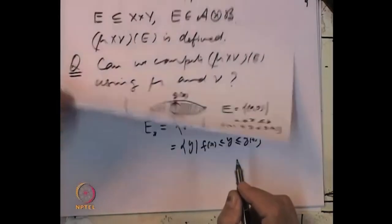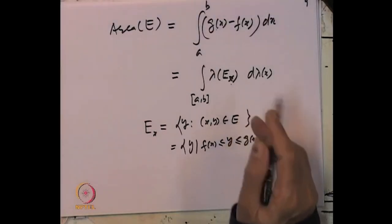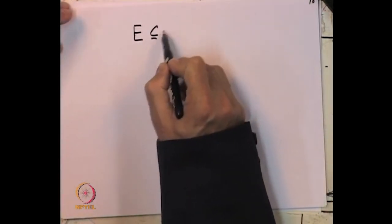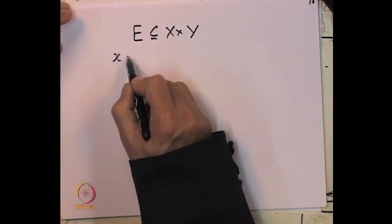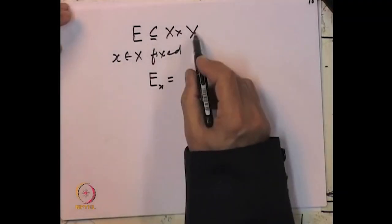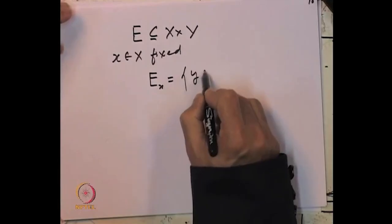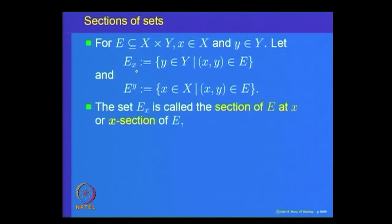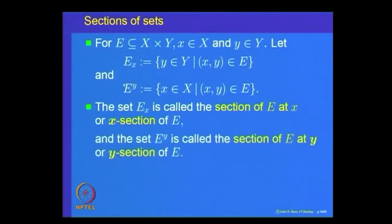Given a set E ⊆ X×Y, for a fixed x ∈ X define the x-section Eₓ = {y ∈ Y : (x,y) ∈ E}, and for fixed y ∈ Y define the y-section E^y = {x ∈ X : (x,y) ∈ E}. Eₓ is called the section of E at x, and E^y is called the section of E at y.